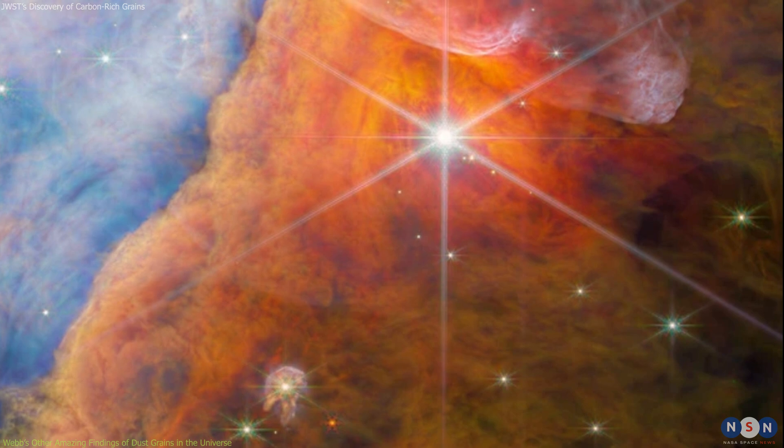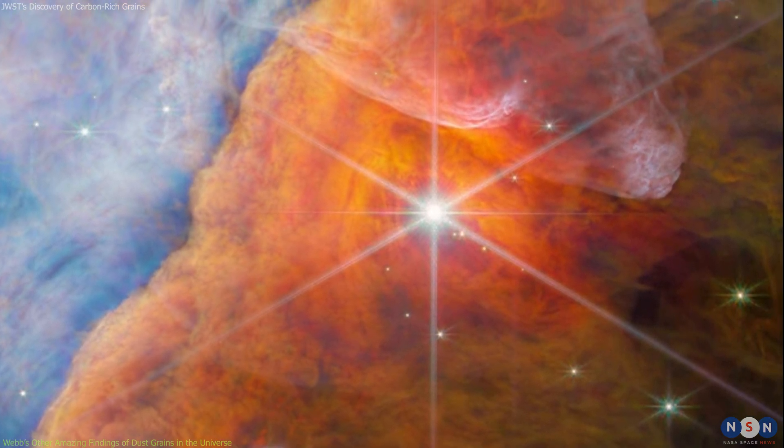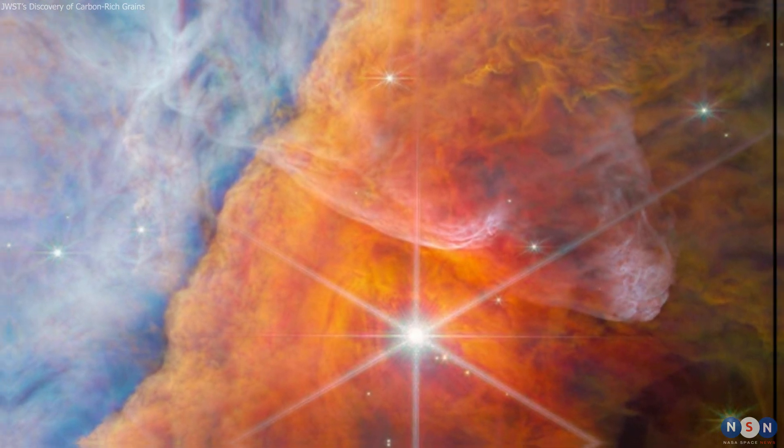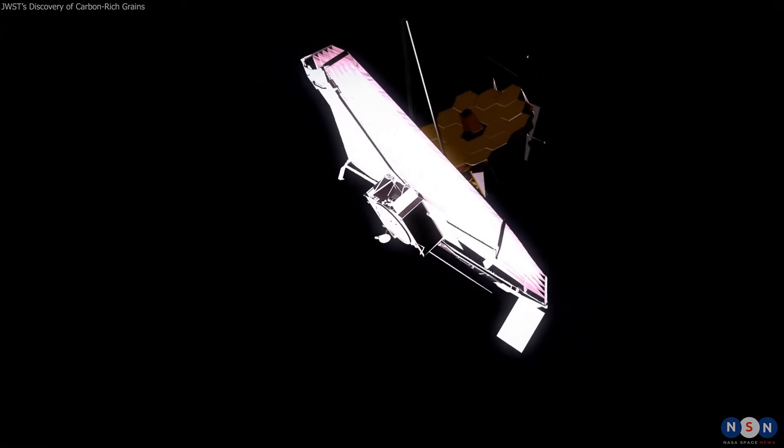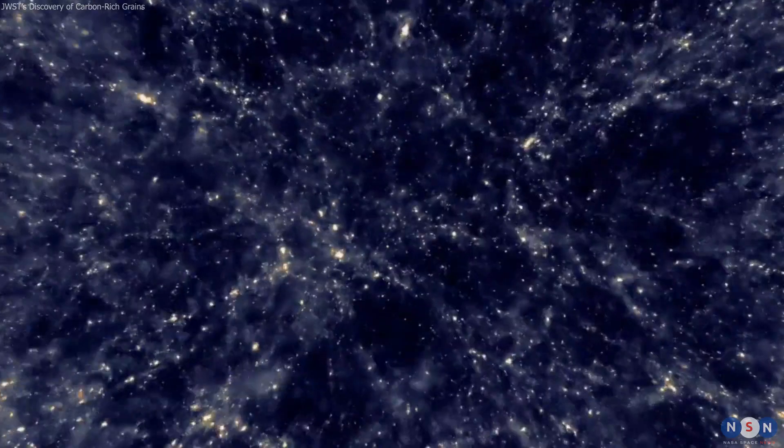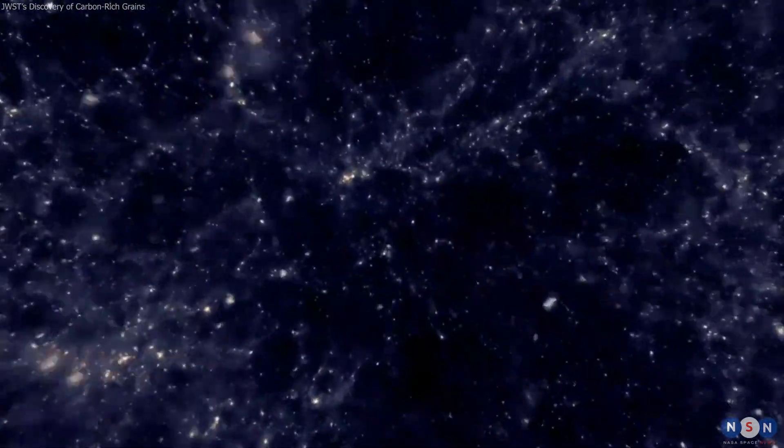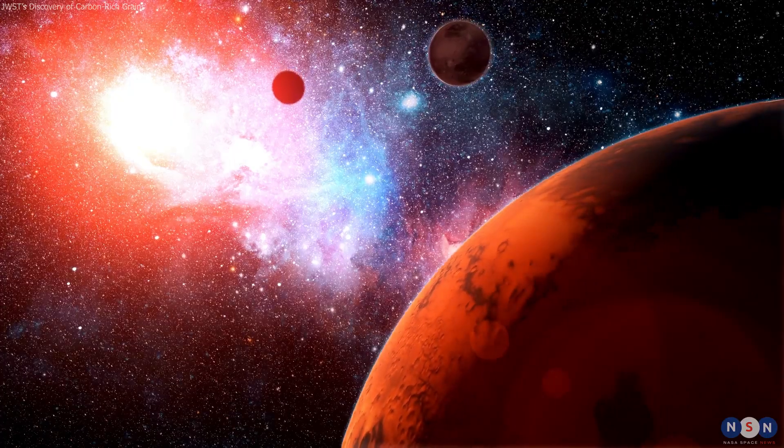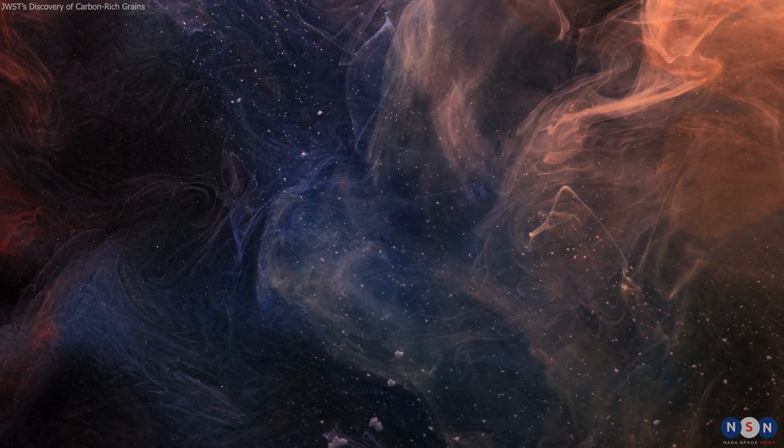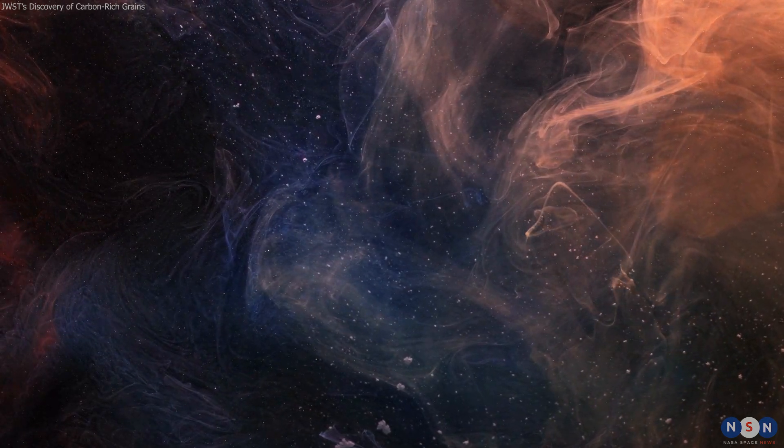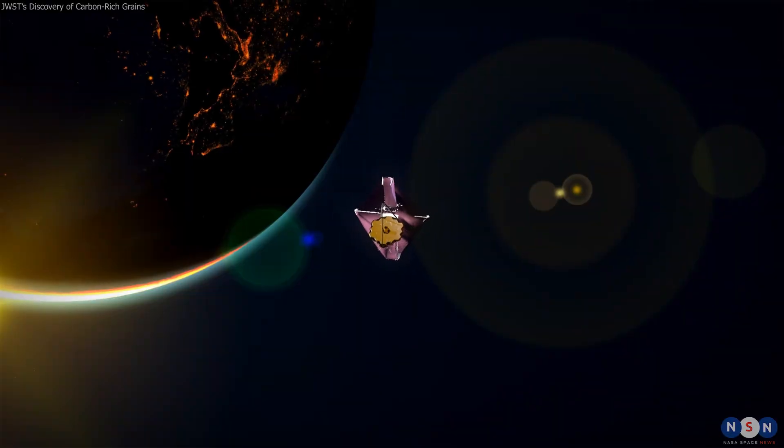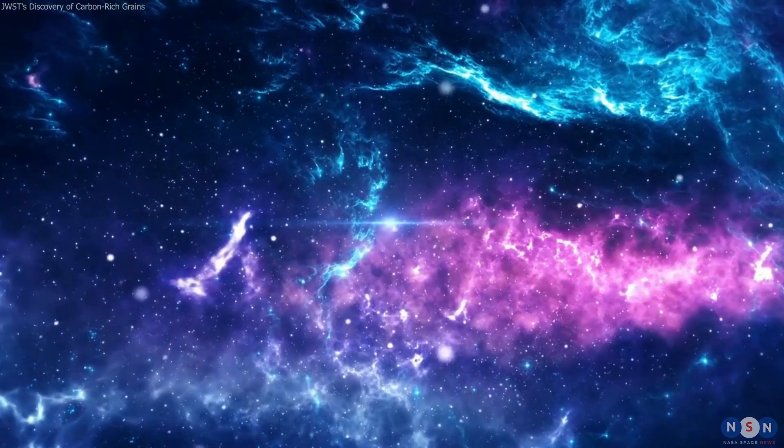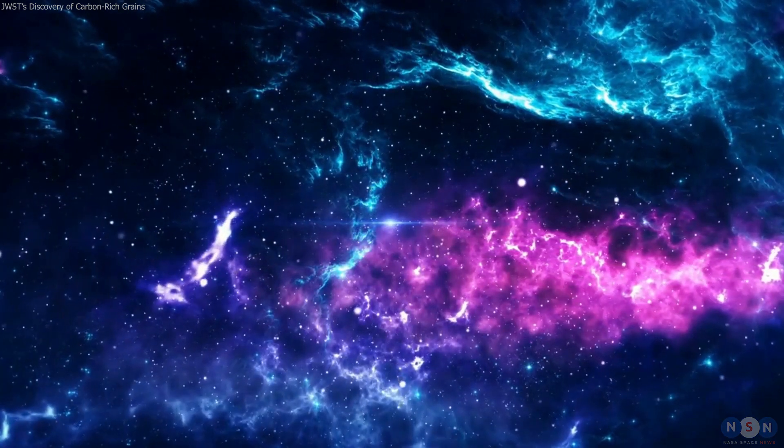They also found that methyl cation is more abundant in regions where stars are forming, which implies that it is produced by chemical reactions involving dust grains and gas. These are just some of the amazing discoveries that Webb has made so far, and there are many more to come. Webb is revolutionizing our understanding of dust grains in the universe and how they affect the formation and evolution of stars, planets, and life. By observing dust grains with unprecedented detail and accuracy, Webb is revealing their secrets and their mysteries and opening new windows into the unknown. Thank you for watching this episode, and don't forget to subscribe to our channel for more exciting videos about Webb and podcasts.